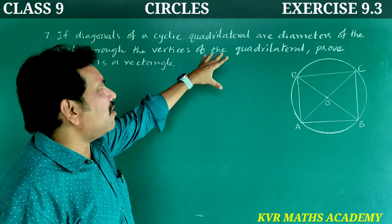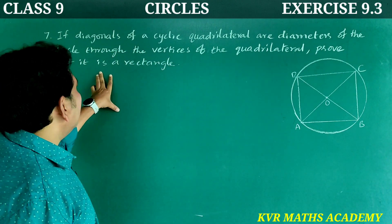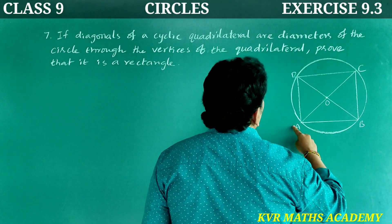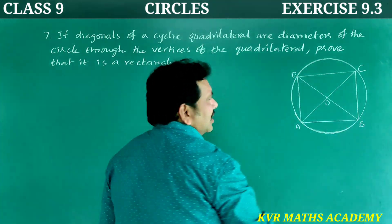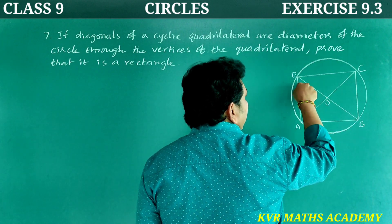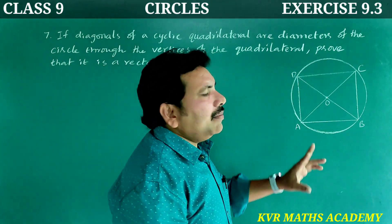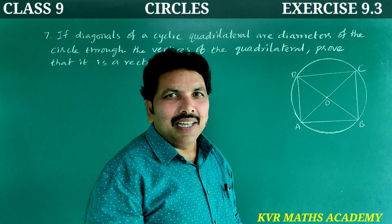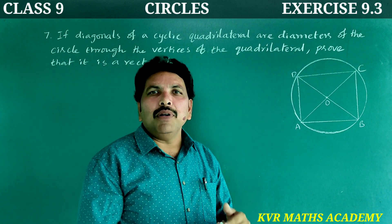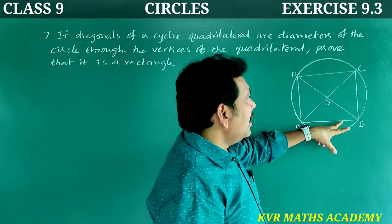If diagonals of a cyclic quadrilateral are diameters of the circle through the vertices of the quadrilateral, prove that it is a rectangle. The diagonals AC and BD of a cyclic quadrilateral are the diameters of the circle. We need to prove ABCD is a rectangle.